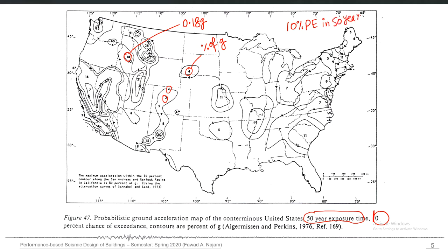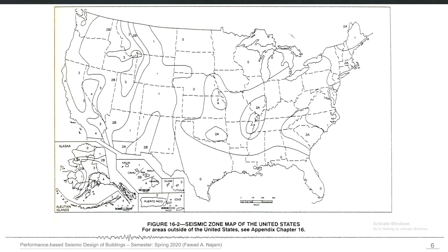This is considered to be the standard design level earthquake, sometimes called DBE or design basis earthquake. This definition of seismic hazard was used to construct the hazard map. Based on PGA values, the map shows zones — zone 0, zone 1, 2A, 2B, zone 3, and zone 4. The west coast is mostly zone 3 and 4, while Central America has zone 1 or 0, so hazard is greater towards the west coast.